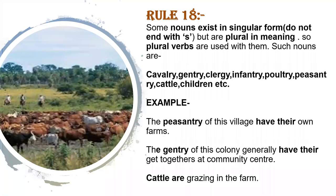Rule number 18: Some nouns exist in singular form but their meaning is plural. So we use a plural verb with them. For example, cavalry, clergy, infantry, gentry — all are plural in meaning although singular in form. For example, 'Cattle are grazing in the farm.'